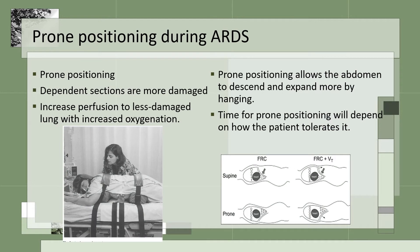Prone positioning is done during ARDS because dependent secretions are causing more damage. To increase perfusion to the less damaged lung and increase oxygenation, the patient is placed on their abdomen with pillows or positioners that allow the belly to hang down between two positioners. This allows the lungs to expand further and increases oxygenation.